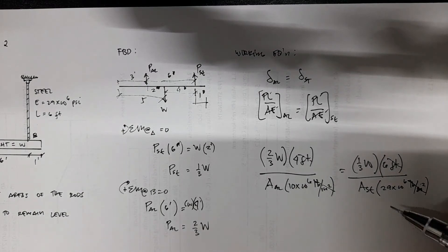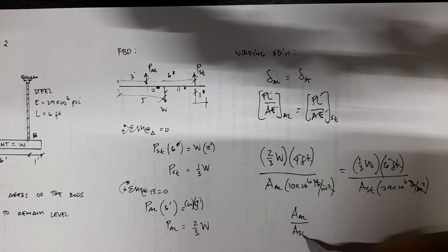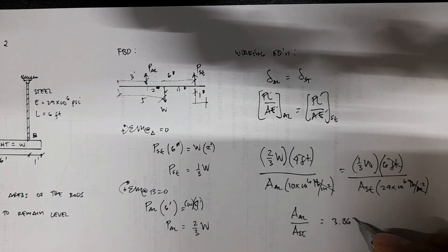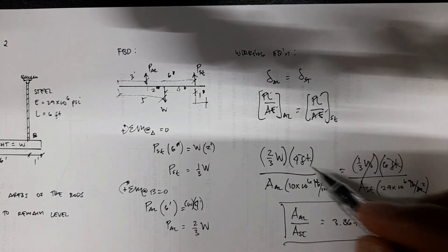We now have A_AL over A_ST, area aluminum over A_ST, so it's equal to 3.867. Also the W will cancel out.